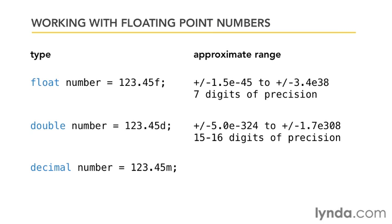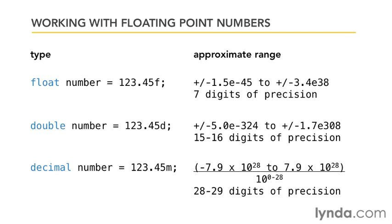To declare a decimal number, you simply say decimal and then the name of the variable. And here I've got 123.45. And you put the little lowercase m on the end, which indicates that it is a decimal number. Decimal numbers have 28 to 29 digits of precision, making them very, very high accurate numbers.